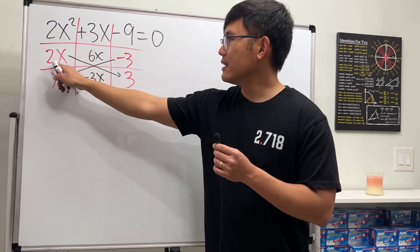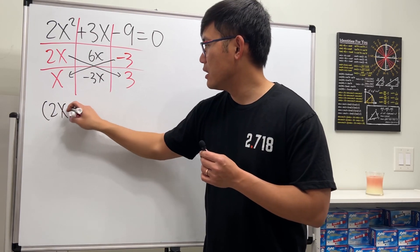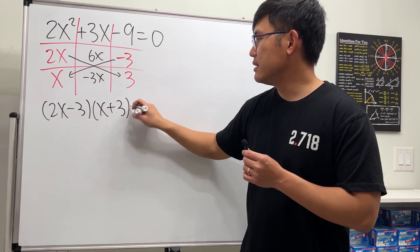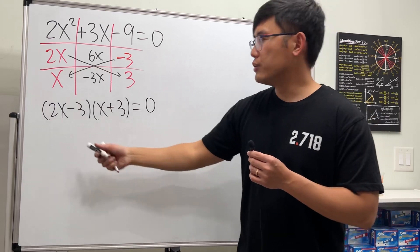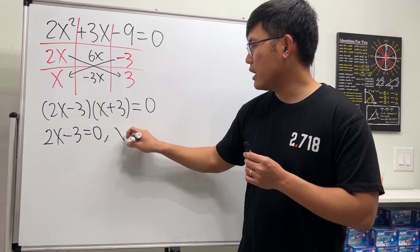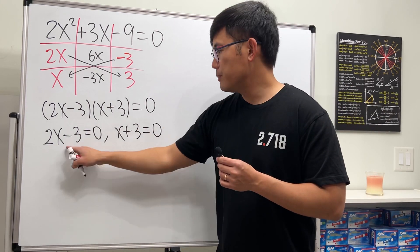The factoring is we read across: we have 2x minus 3 times x plus 3, and this is still equal to zero. Now we just have to put the first factor equal to zero: 2x minus 3 equals zero, and the other one also make it equal to zero. Solve this.